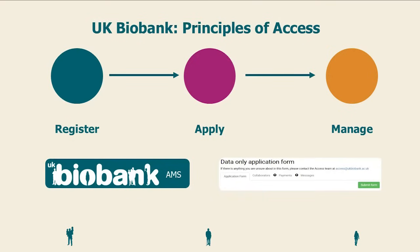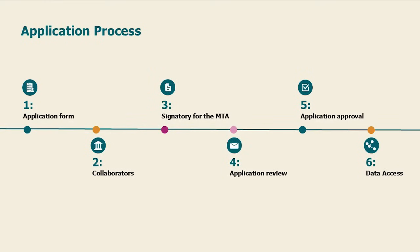Let's look at your application process in more detail. First, register using the Access Management System (AMS) and have your credentials reviewed by the access team to confirm you are a qualified researcher. Submit your application detailing your research goals and listing collaborators who also need to be registered with UK Biobank. Include a signatory for your Material Transfer Agreement (MTA), which is the legal agreement between UK Biobank and your institution. UK Biobank will review your application and may request adjustments. Once approved, payment and signatures for the MTA are received, training is complete, and you can access the data via the UKB Research Analysis Platform.